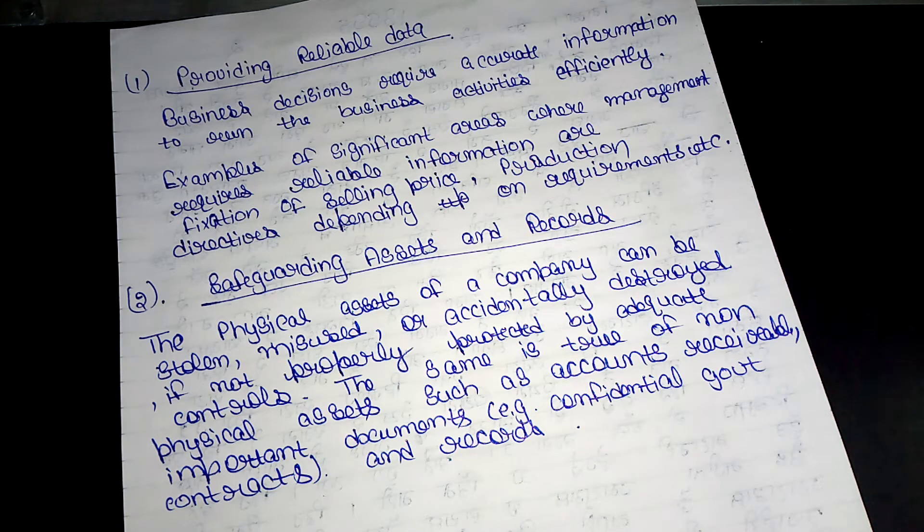Physical assets like computers and furniture can be destroyed, misused, or accidentally destroyed. If we don't use security and control, the internal control system should be used in the organization.